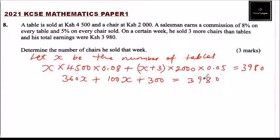You get 360x plus 100x plus 300 equals 3,980, so you get 460x equals 3,680. Divide both sides by 460.